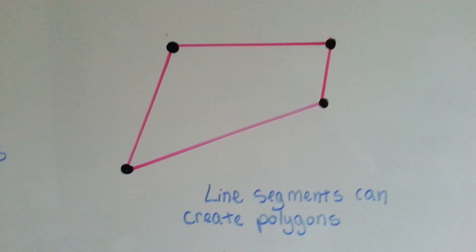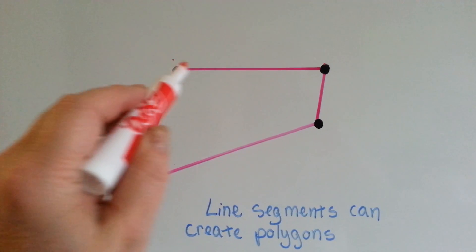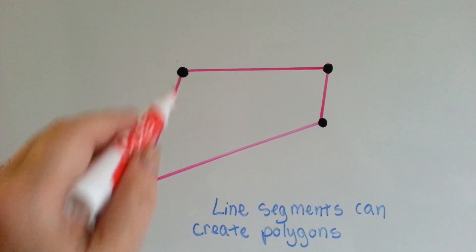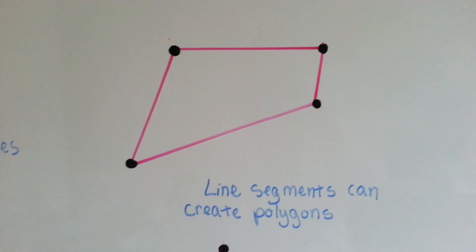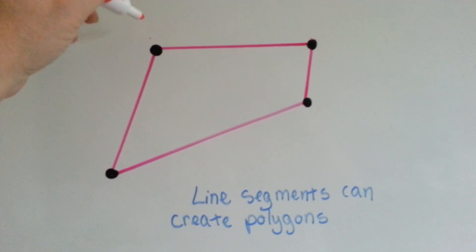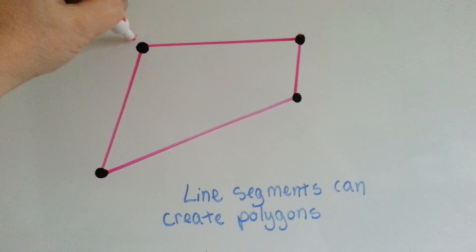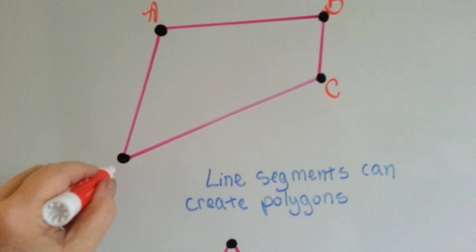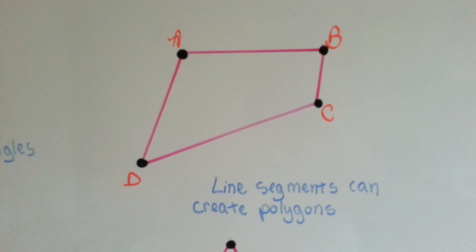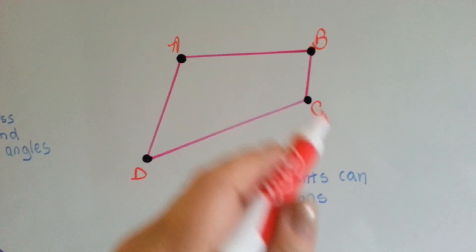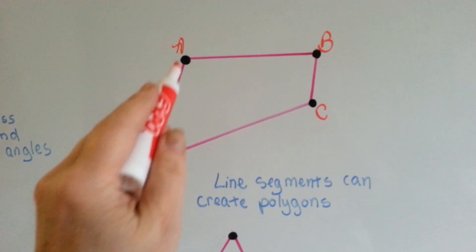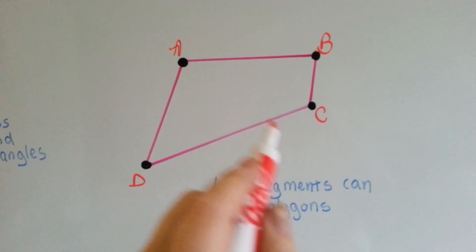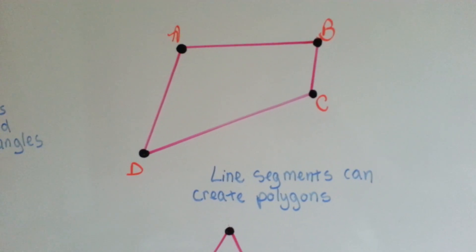Line segments can create polygons. We've got four line segments. One, two, three, four. And they made a polygon. So this could be line segment A, B. Then we can name this one C and this one D. We could call this polygon A, B, C, D. But we could also say that this is line segment A, B or B, A. You know, backwards or forwards.